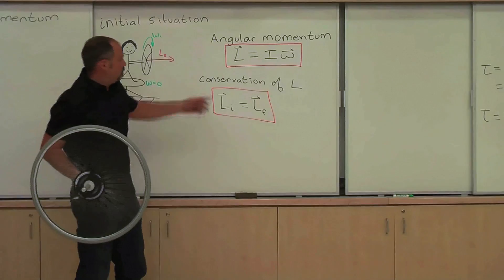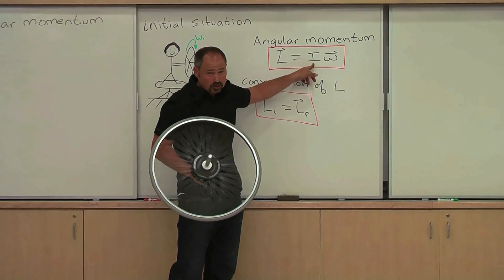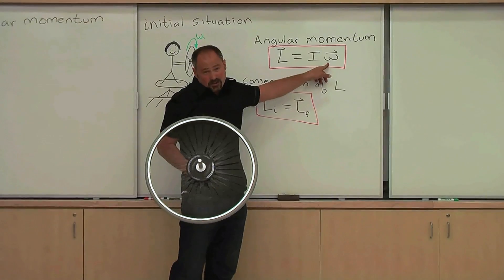First of all, what is angular momentum? Angular momentum gets the symbol L, and it's equal to the moment of inertia multiplied by the angular velocity.